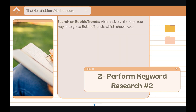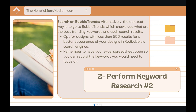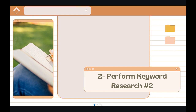The second way is more specific. Go on Bubble Trends — it's the quickest way to get trending keywords. There's a paid version and a free version; I personally use the free version and it works great. It shows you the best trending keywords and the search results. Select keywords with less than 500 results for a better chance of your design appearing. This will give you a really good stance to rank higher. Keep your Excel spreadsheet open to record the keywords you need to focus on.